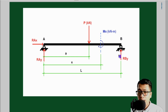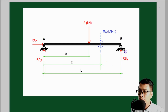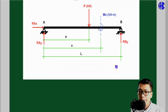Mx is the moment at a certain point in kilonewton-meters. RAx is the horizontal reaction at A, RAY is the vertical component at A, and RBY is the vertical component at point B.